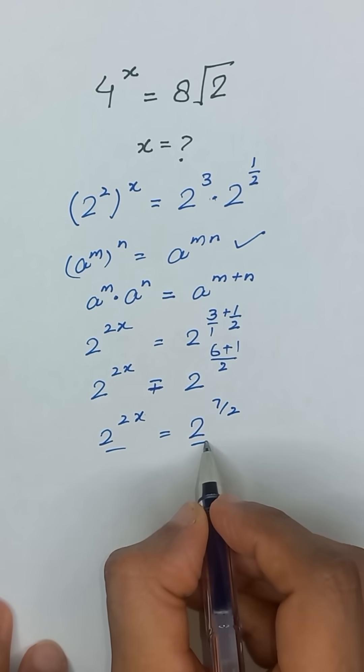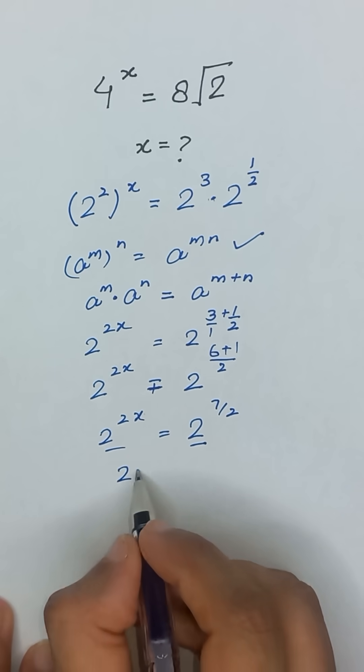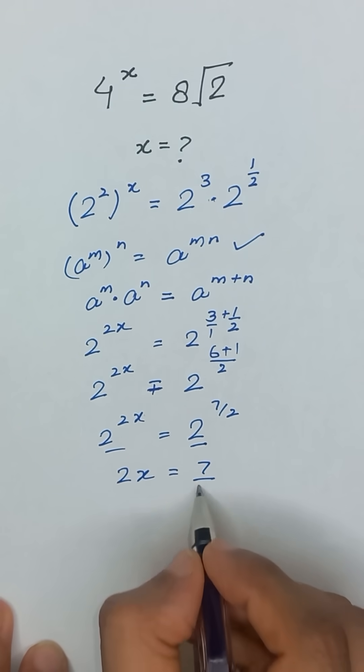Now the bases are the same, so we can equate the powers. 2x will be equal to 7 divided by 2.